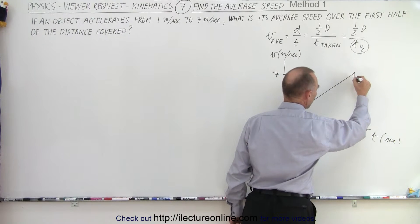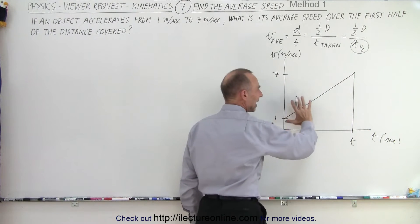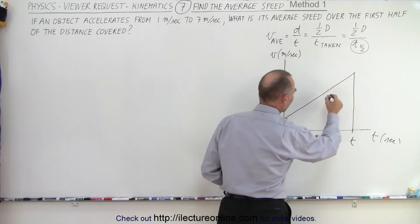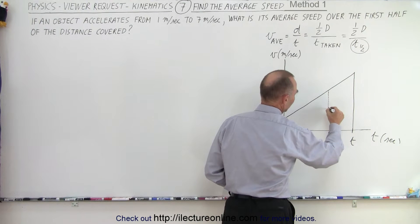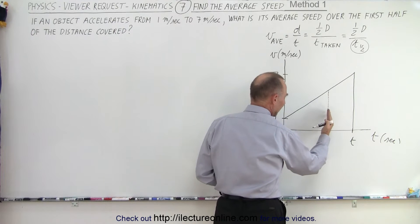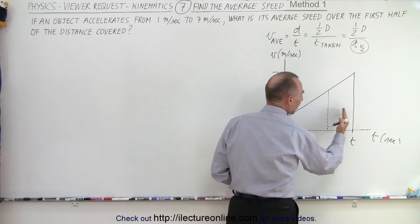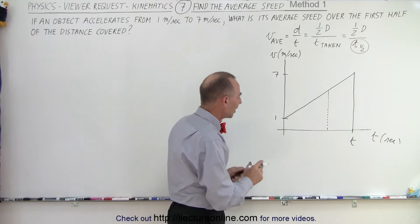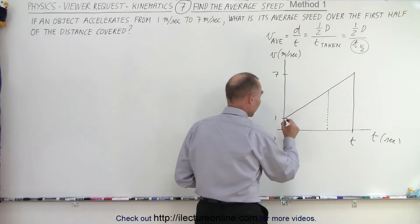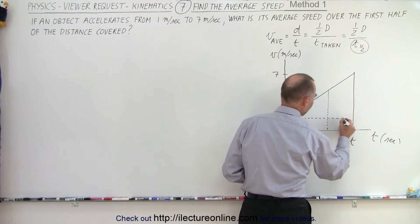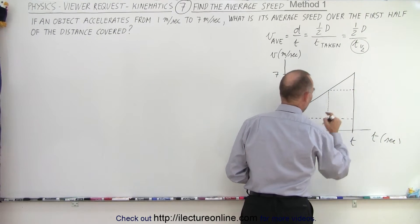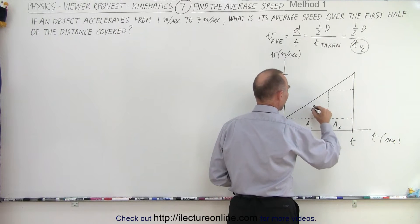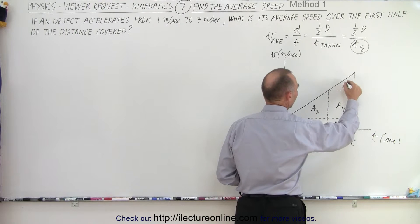What we know about the velocity versus time graph is that the area underneath the curve represents the distance traveled. At some point in time we will have traveled half the distance, which means if I draw a vertical line at that point, the area underneath the curve on the left side equals the area on the right side. I'll draw two dotted lines to create five different regions: A1, A2, A3, A4, and A5.